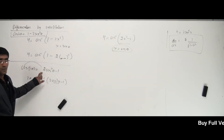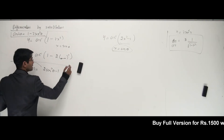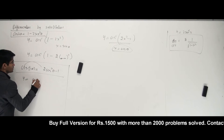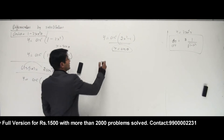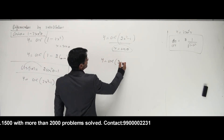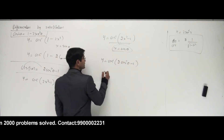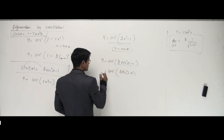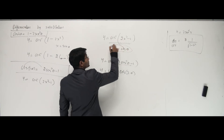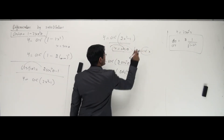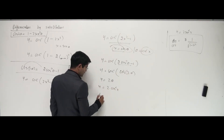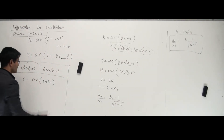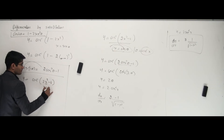Let me write the two types from this formula. First: y equals cos inverse of 2x squared minus 1. Taking x as cos theta: y equals cos inverse of 2 cos squared theta minus 1, which is cos inverse of cos 2 theta. Cos and cos inverse cancel, y equals 2 theta, and theta is cos inverse of x. So y equals 2 cos inverse of x. Differentiating: dy/dx equals 2 times minus 1 over root of 1 minus x squared.